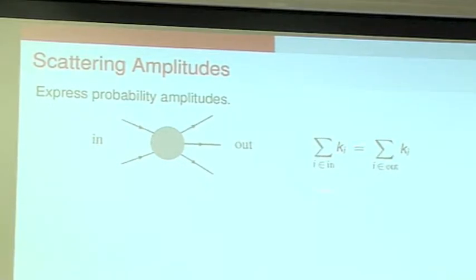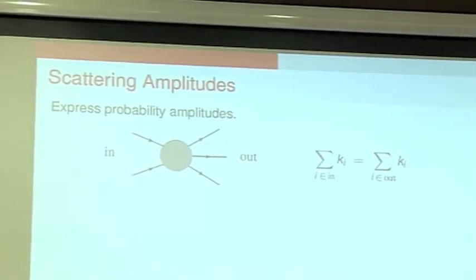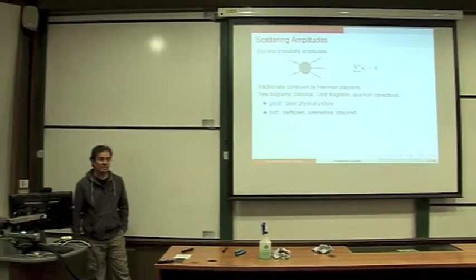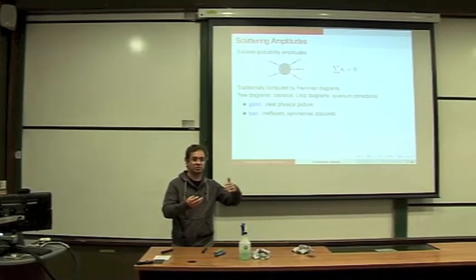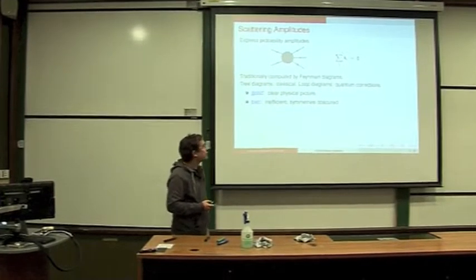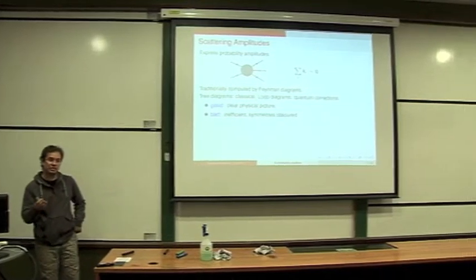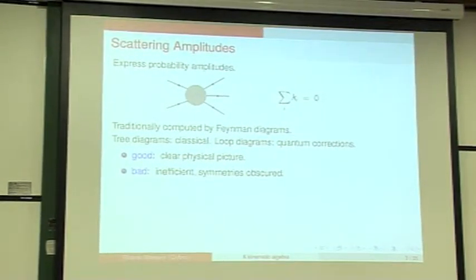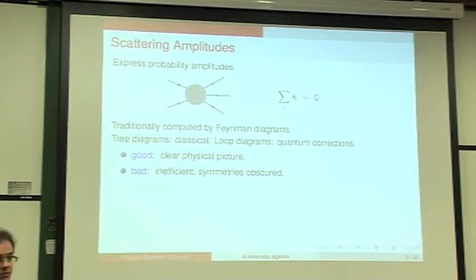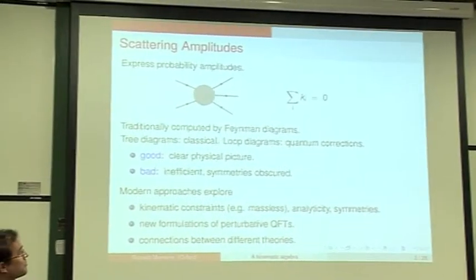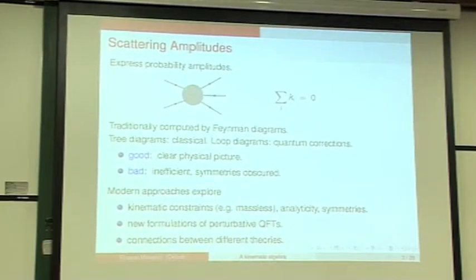Since we were told that some people here don't work on these fields, let me make some very general comments. Scattering amplitudes express the probability of going from some in-state to some out-state, and we have momentum conservation for the particles involved. By convention, we can say they're all incoming to make it more symmetric. Amplitudes are computed traditionally by Feynman diagrams, where tree diagrams correspond to the classical contribution to scattering, and loop diagrams correspond to quantum corrections. They have a clear space-time interpretation and give the correct answer. However, they're inefficient for a high number of legs or loops, and they obscure many symmetries because individual diagrams will not have all the symmetries you expect from the amplitude.